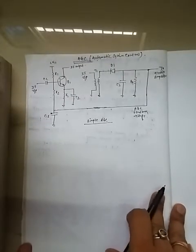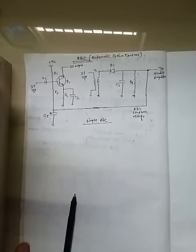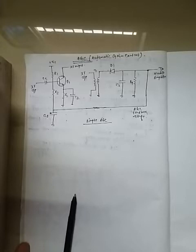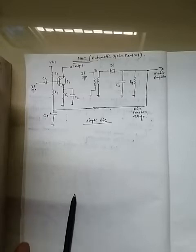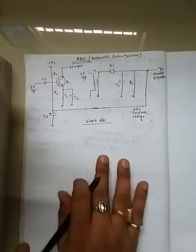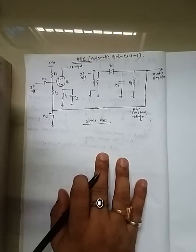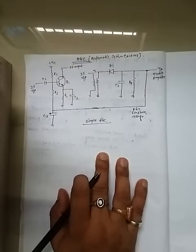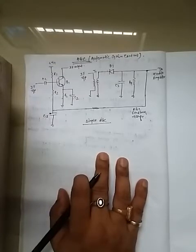The gain is always kept constant for a receiver. So an AGC circuit is used to keep the gain constant. The overall gain of the radio receiver is varied according to the changing strength of the received signal.